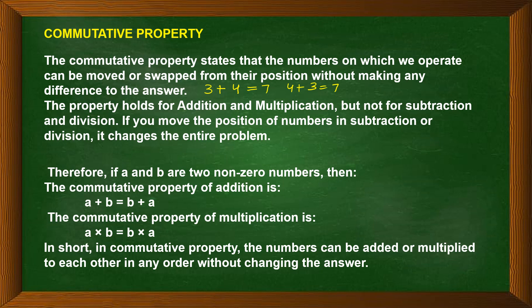In multiplication, 3 into 4 equals 12 and 4 into 3 also equals 12. So even if we change the order of the numbers, the answer remains the same. This is the commutative property. This property holds true only for addition and multiplication, but not for subtraction and division.